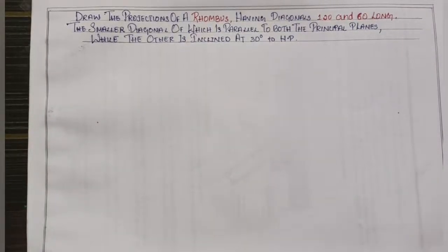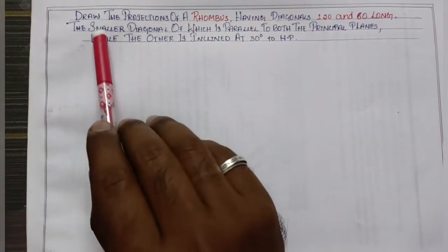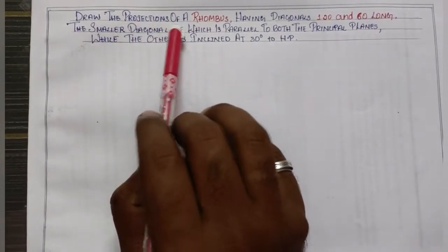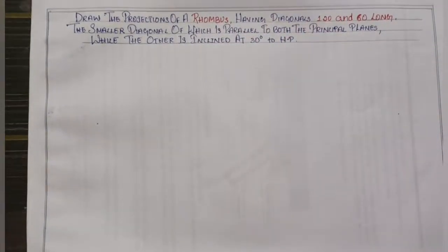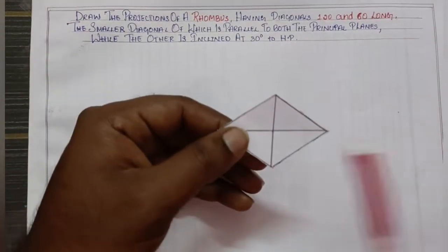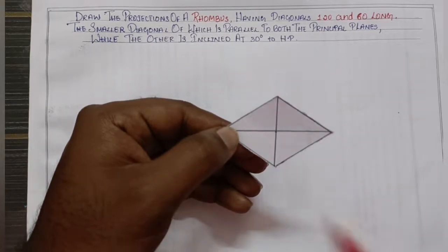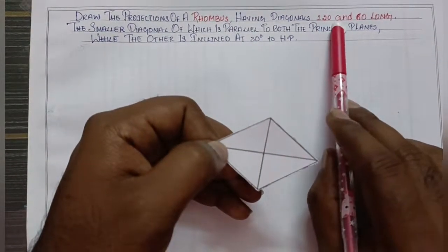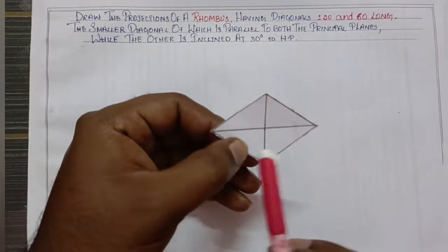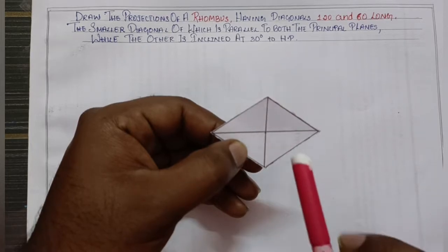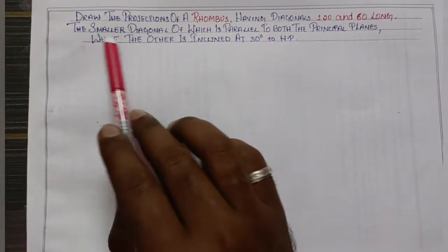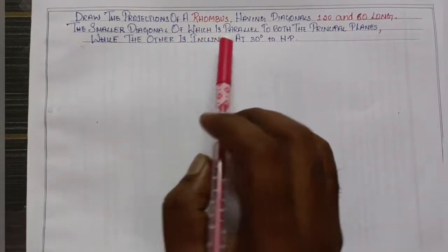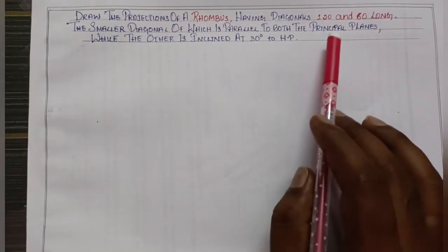Hi buddies, next problem in the triangle of important quality. The question is to draw the projections of a rhombus. A rhombus has diagonals, and the diagonals are named. This rhombus has diagonals of 120 and 60 in length — so one diagonal is 120 and the height diagonal is 60.